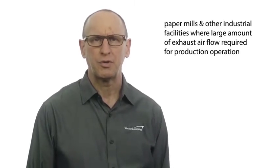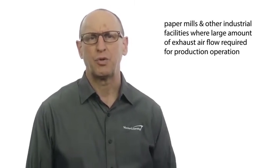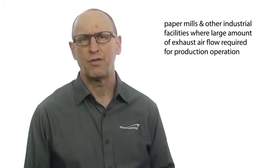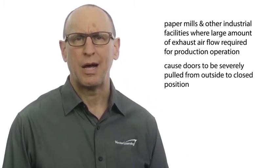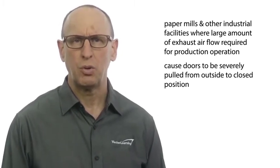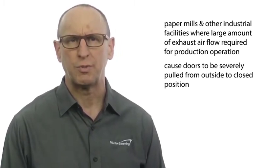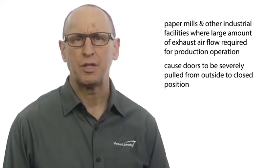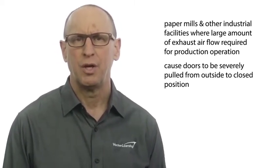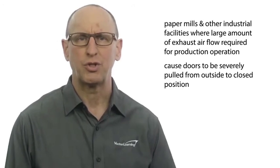Some facilities need to pay special attention to this condition, such as, from my experience, in paper mills and other industrial facilities where there's a large amount of exhaust air flow required for the production operation. This can cause outside doors to be severely pulled from the outside to a closed position. One solution I used was to add makeup air to the facility to try to equalize the pressure and avoid the huge negative pressure in the building.